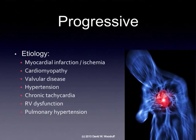Heart failure can be a progressive disease, meaning that it gets worse over time as a result of compensatory mechanisms, such as our sympathetic nervous system, our renin-angiotensin system, and aldosterone kicking in. These mechanisms are designed to help the patient overcome the decreased cardiac output, but they actually make the heart failure worse over time.